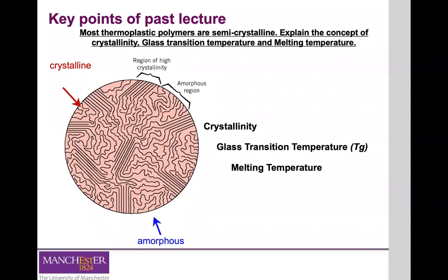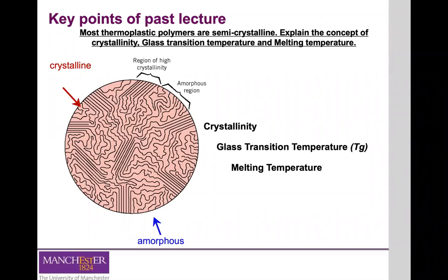The glass transition temperature is lower than the melting point of the crystalline form, if one exists. The melting temperature is probably the most important temperature in the specification sheets of the material — it is the temperature at which a crystalline polymer changes state from solid to liquid at atmospheric pressure. Also importantly, the higher the degree of crystallinity, the higher will be the temperature required to melt and process these materials. In other words, the higher the crystallinity level, the higher the melting point.